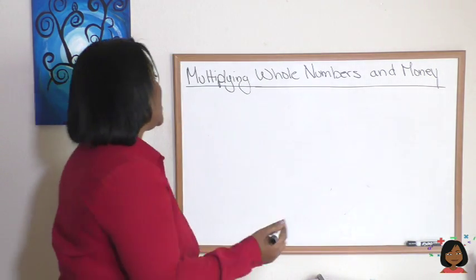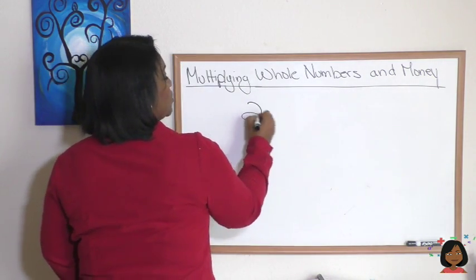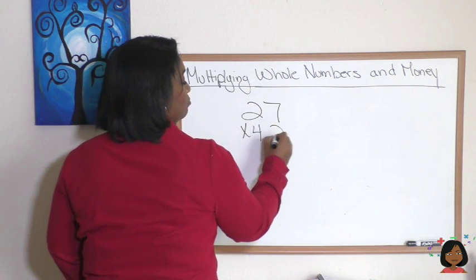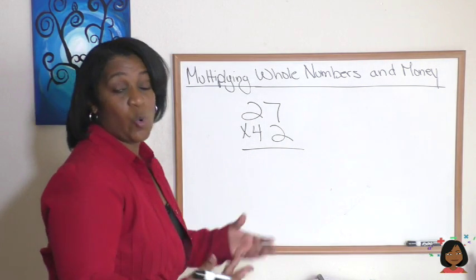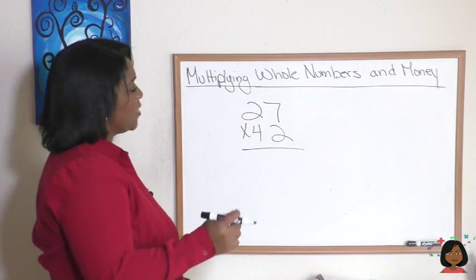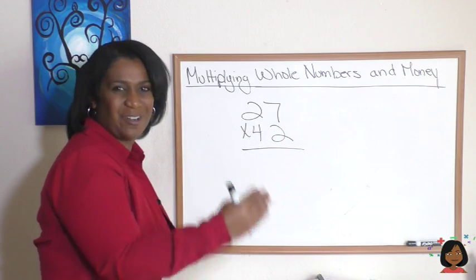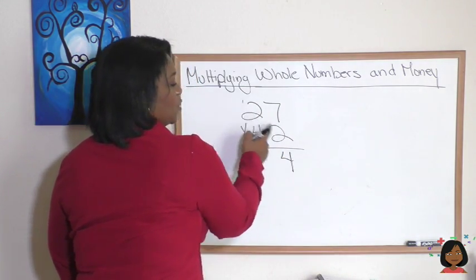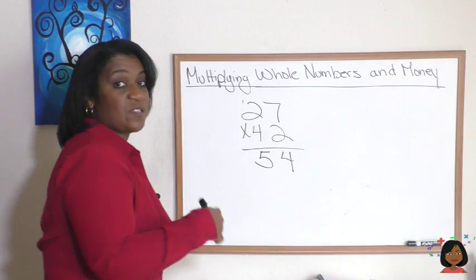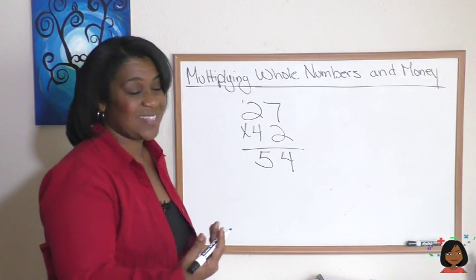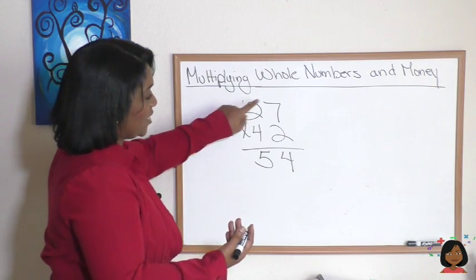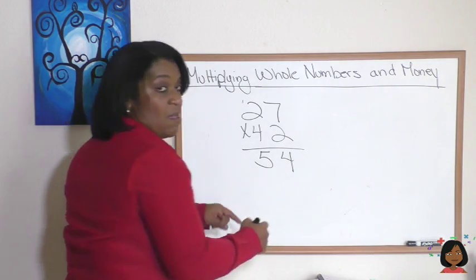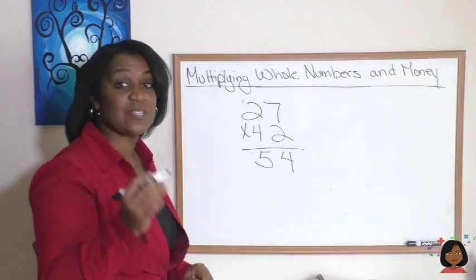Let me give you two numbers. Let's do 27 times 42. By now you probably know the first thing we do is multiply 27 times 2 and write that number down. 7 times 2 is 14, 2 times 2 is 4 plus that 1 is 5, so we get 54.